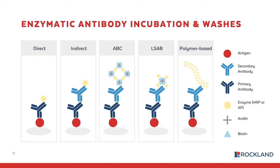Sometimes the antigen of interest may not be present in high abundance in the tissue, due to low endogenous expression, poor drug uptake to the tissue, or a knockdown experiment result. In these instances, amplification methods can be used to increase the signal. Signal amplification methods build on the indirect detection methods. The two more popular methods exploit the high binding affinity between avidin and biotin. These are known as the ABC method and the L-SAB method. In the ABC method, you begin by incubating the tissue with your primary antibody of interest.